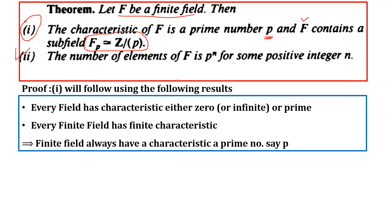The proof of part one follows using results we have already discussed in previous lectures. Every field has characteristic either 0 or a prime number. For a finite field, the characteristic must always exist, so it cannot be 0 or infinite. Therefore the characteristic must be a prime number, and we suppose that prime number is p.